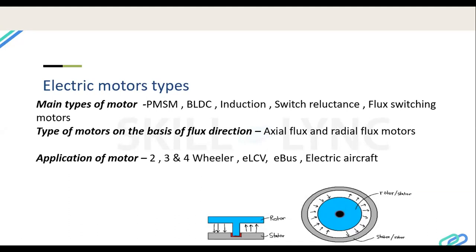On the basis of flux type, there are two major motor types: axial flux and radial flux. Radial flux motors are used in normal applications — two-wheelers, four-wheelers, and buses. Axial flux motors are emerging and offer higher power density, but cooling and manufacturing are more difficult. One interesting application is electric aircraft, which uses axial flux motors because they require high power density in a small space.